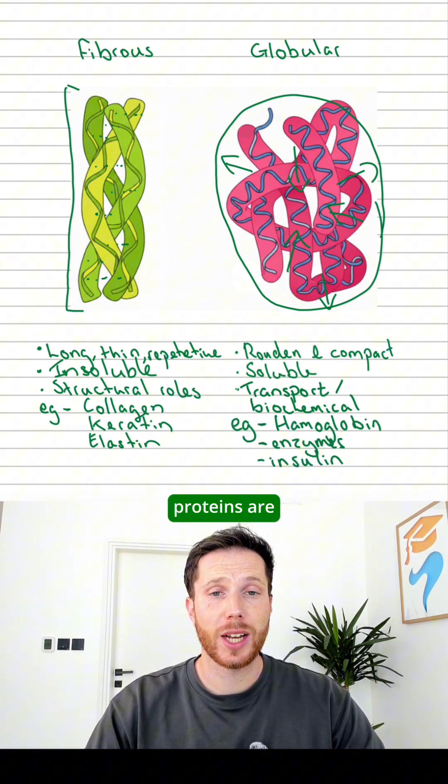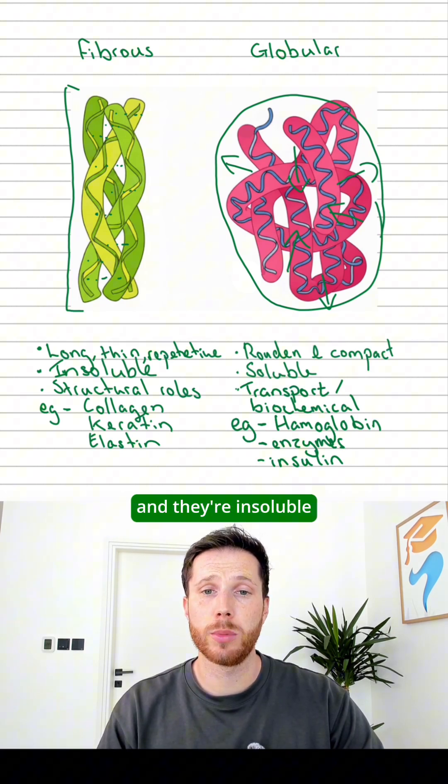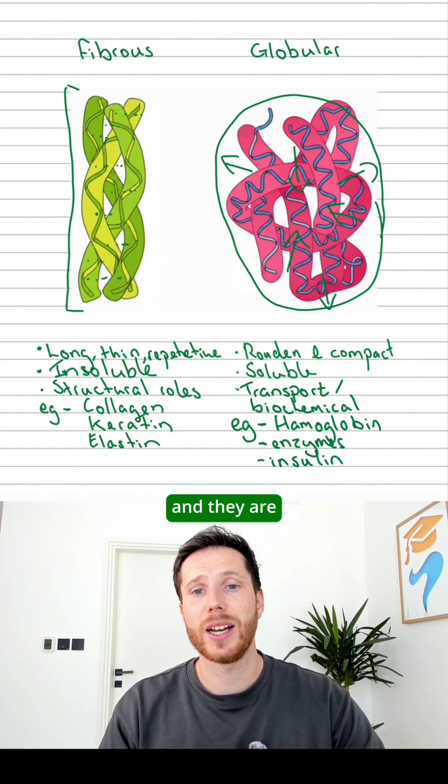So just to recap, fibrous proteins are longer, stronger, tend to be used for structural roles and they're insoluble. Globular proteins, more rounded and compact, tend to be used for functional roles and they are soluble.